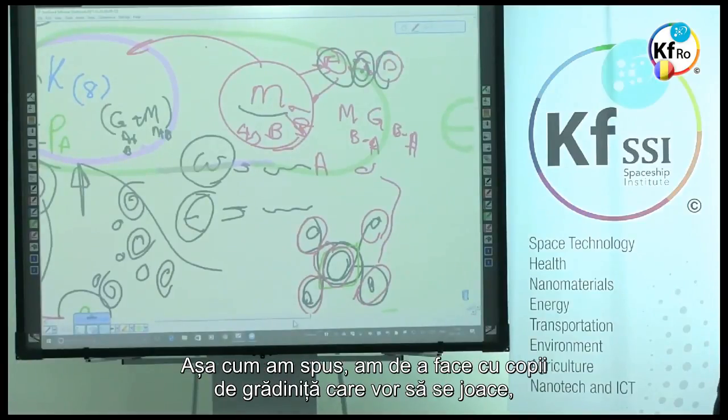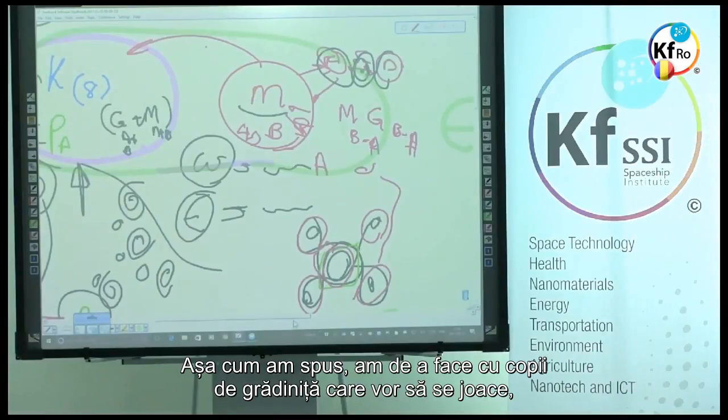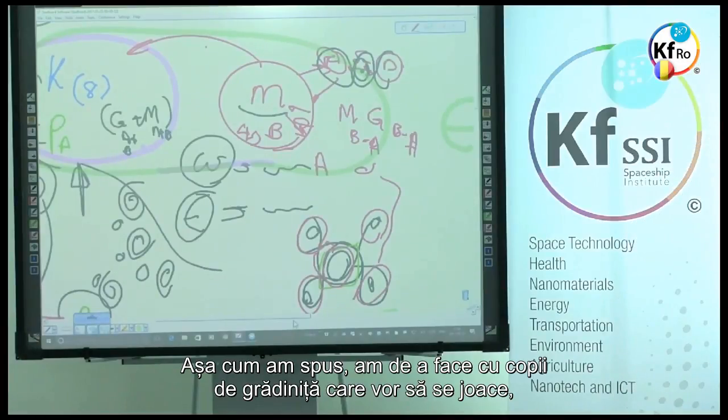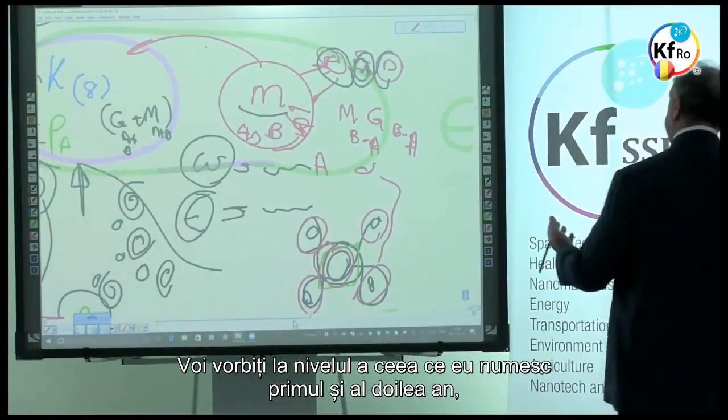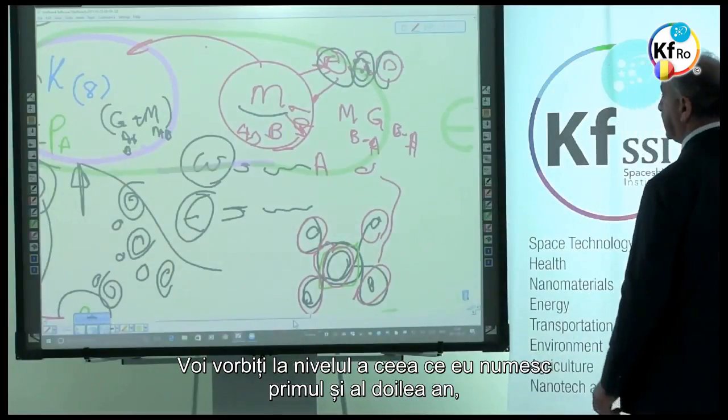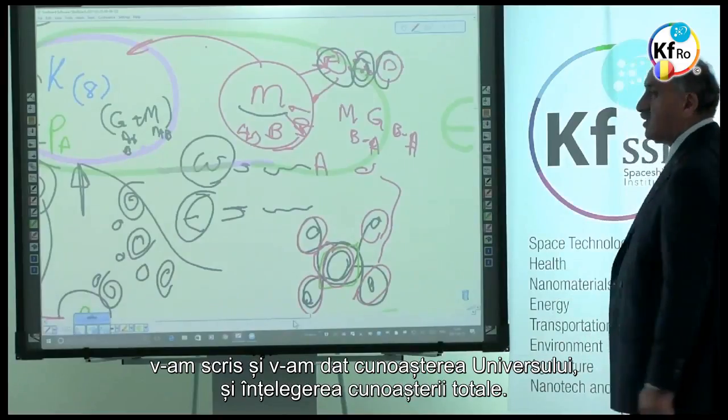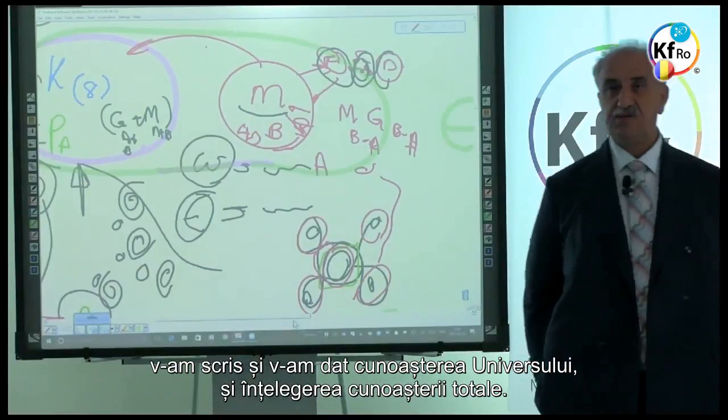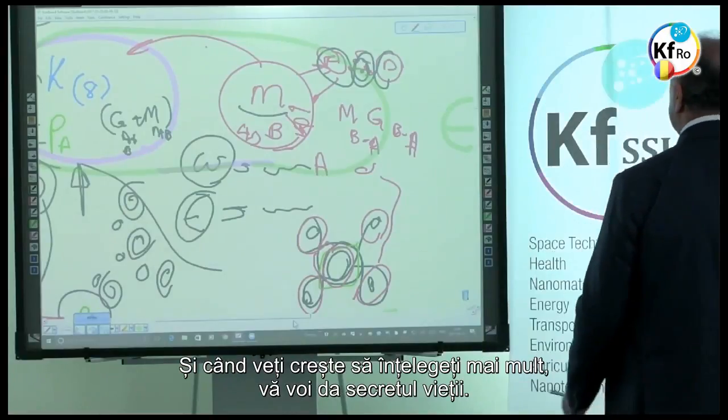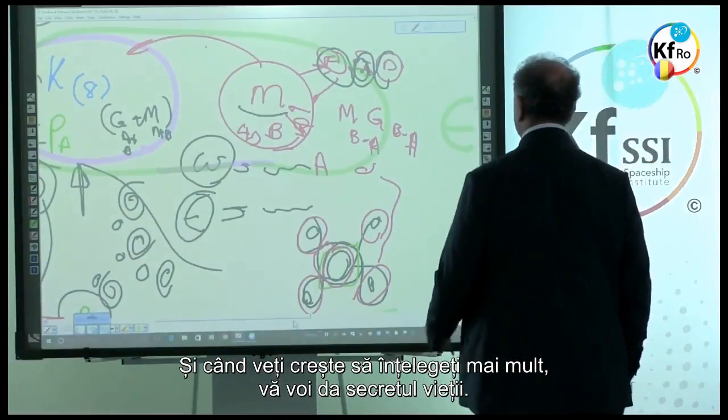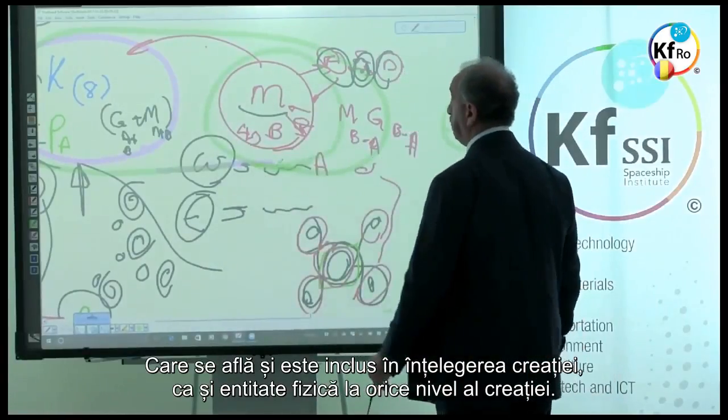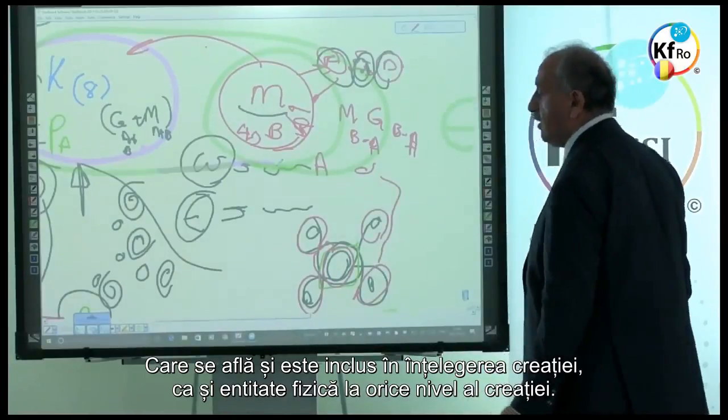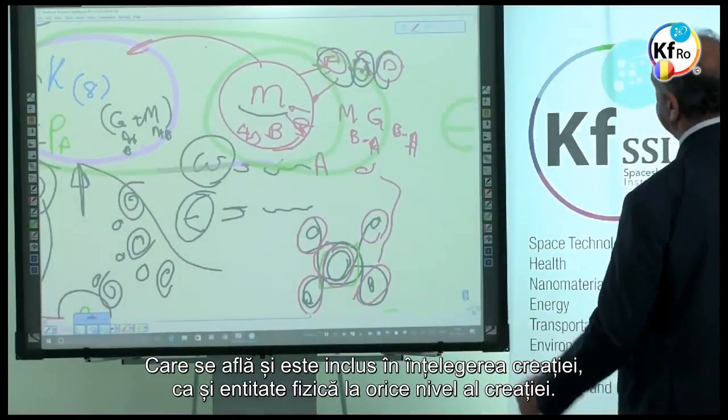As I said, I deal with the children in the kindergarten, you like to play, I give you the cores and I give you the GANS making machine and nano coating. You speak at the level of what I call first and second year. I write you and give you the knowledge of the universe and understanding a total of knowledge. And when you grow up to understand more, I'll give you the secret of life, which sits and embedded in understanding of the creation as a physical entity at any levels of the creation.